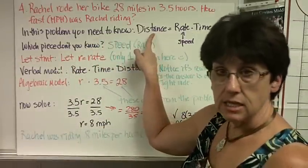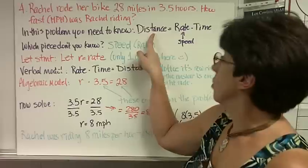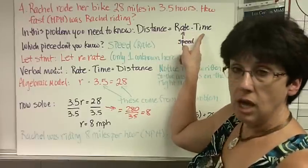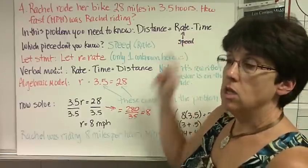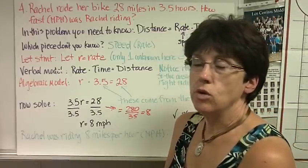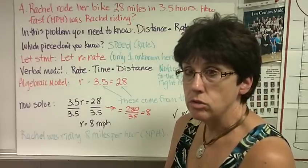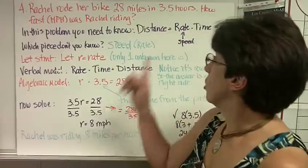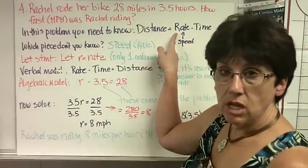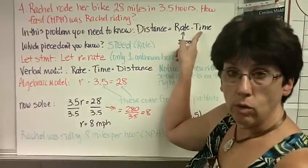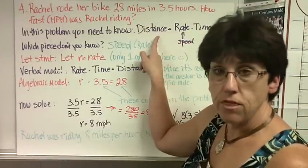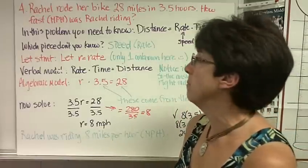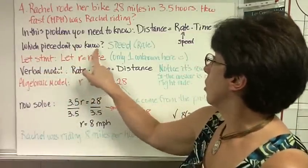In this problem, you need to know that distance, how far you go, equals rate, how fast you're going, or your speed, times time, how long you're going. So if you were going 12 miles per hour for 3 hours, 12 times 3, you would go 36 miles. If you were going 17 miles per hour for 2 hours, 17 times 2, you would have gone 34 miles. So it's just a multiplication problem.